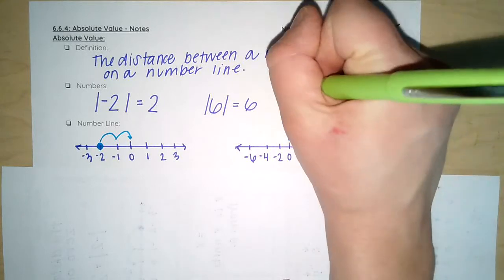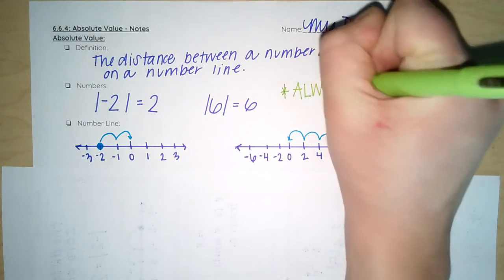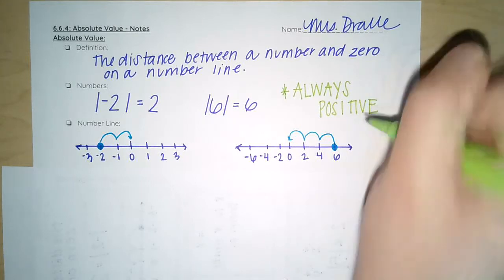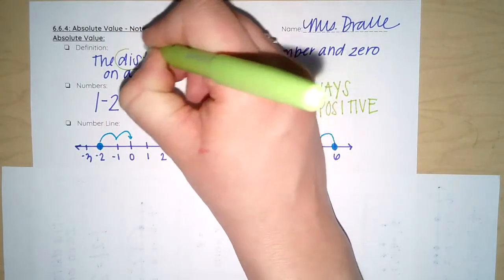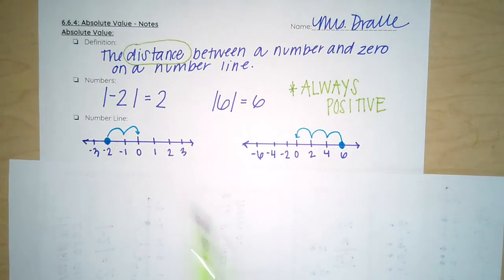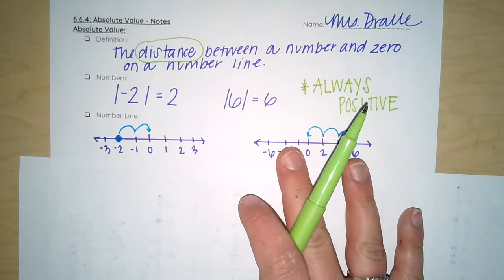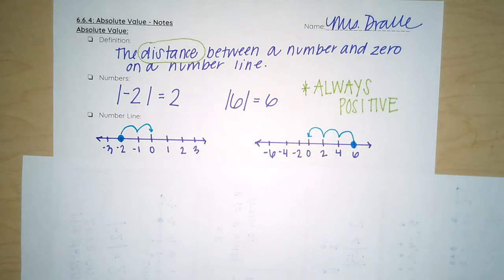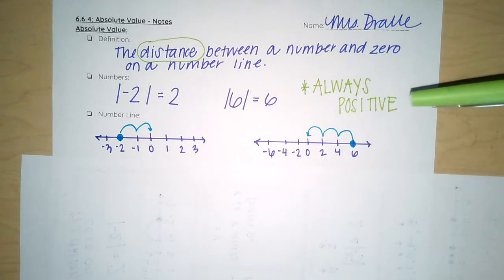So what do we notice here? We notice that absolute value is always, always positive. If you think about it, we're talking about the word distance — how far something is from zero. So if you think about distance, for example, if you have an Apple Watch or a pedometer that counts your steps, it doesn't matter if I walk forward or backward or to the side. My distance is increasing. I'm not taking negative steps. So the distance is always, always positive. Therefore your absolute value will always be positive.